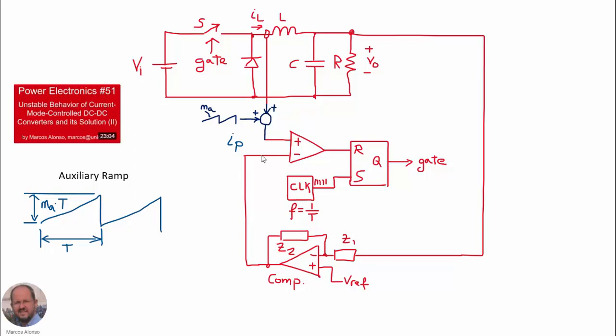We need an auxiliary ramp and an adder, we need a comparator, a flip-flop, an oscillator, and an error amplifier to implement the closed loop operation.